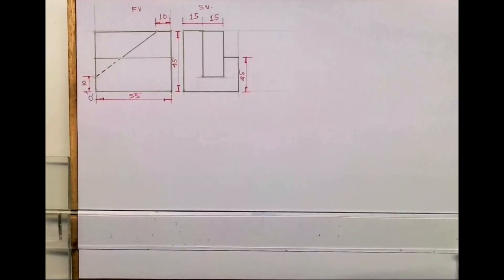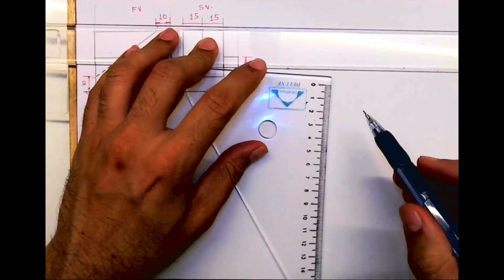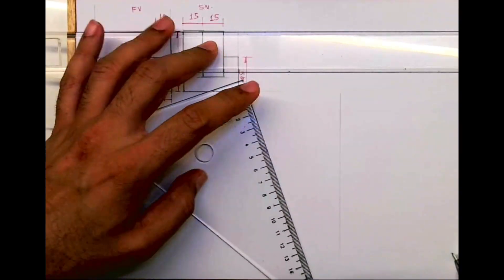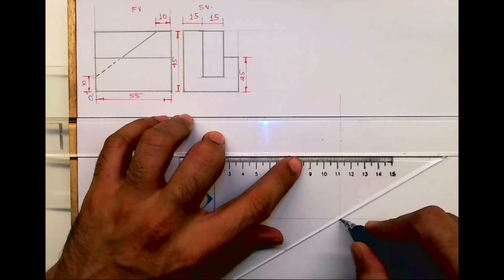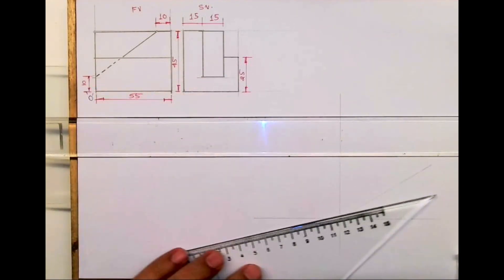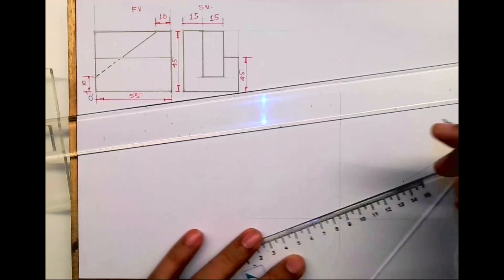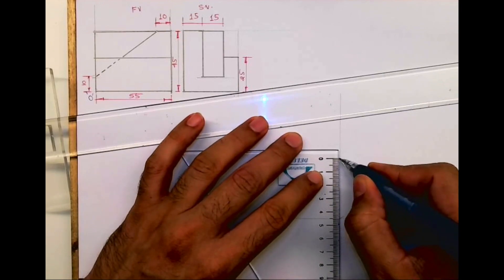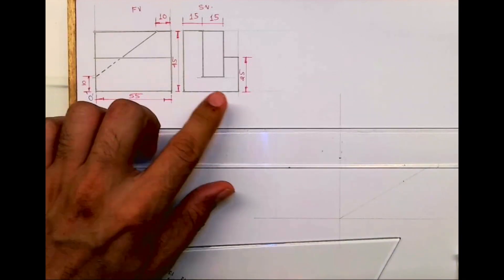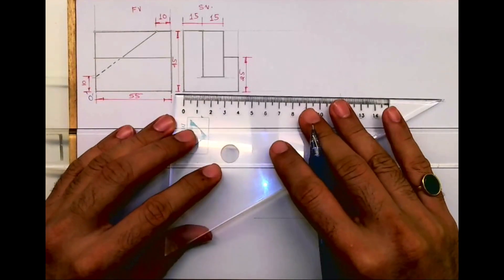Welcome to technical drawing. Today we'll see this sum in isometric. We have front view and side view with length, width, and height. First we will mark the origin, then we'll take 55 on the right side because 55 is on the right side of O. Height is 45 and width is 40.